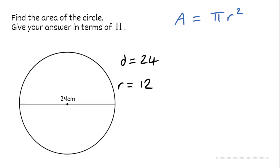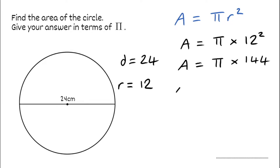So now we can substitute this back in. We've got the area is equal to pi multiplied by the radius squared, so that would be 12 squared. Simplifying further, we know that 12 squared is 144. So that's pi multiplied by 144, which we can simply write as 144 pi. So for our final answer, the area would be 144 pi. We've got to remember to use the correct units — if our radius was in centimetres, our area would be in centimetres squared.